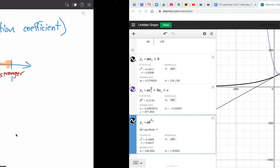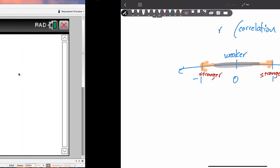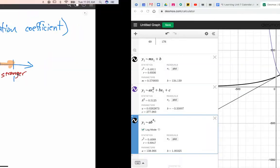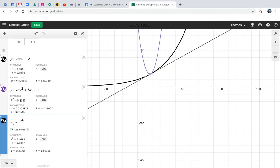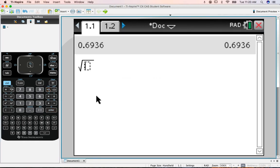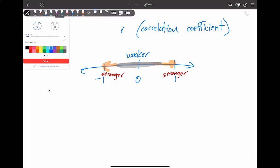So we want to get closer to one or negative one. So if I come over here, and I look at these R values, I know that the linear function is 0.6936. So 0.6936 is the strength of the linear one. This is the linear model.